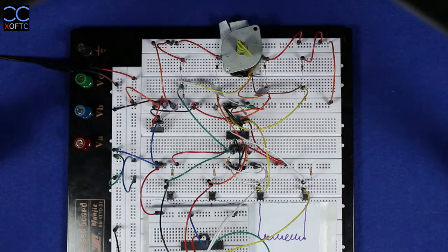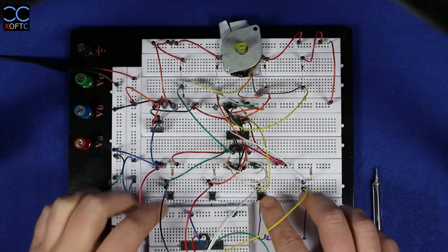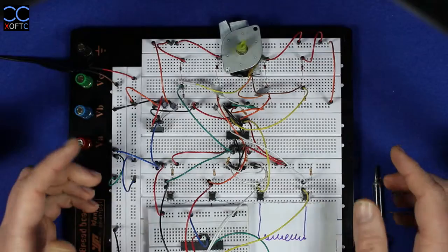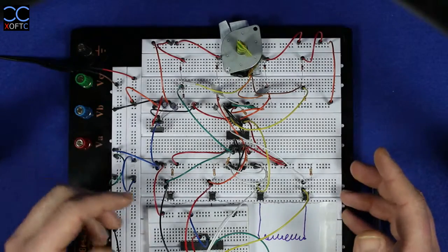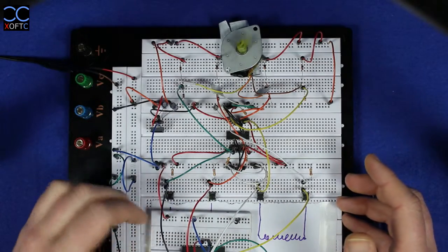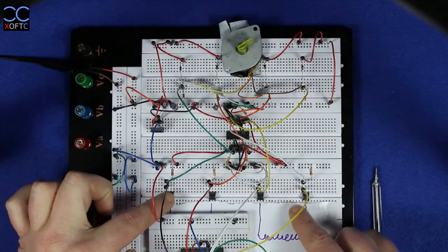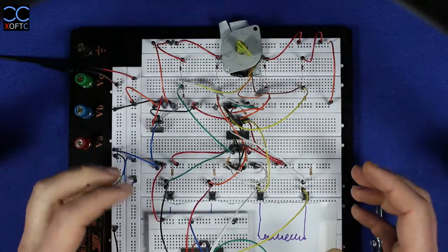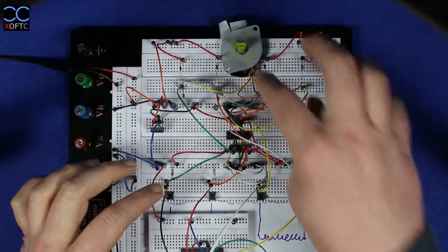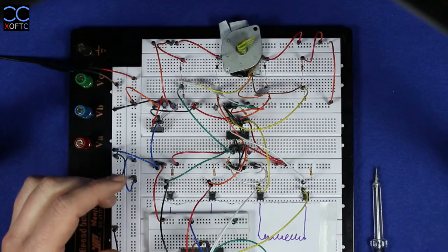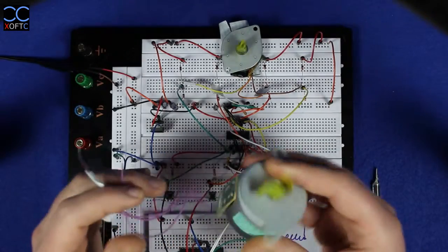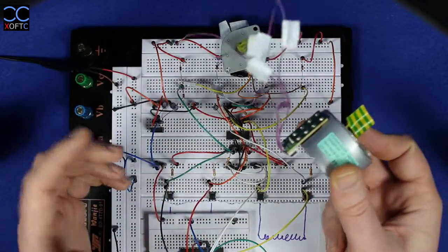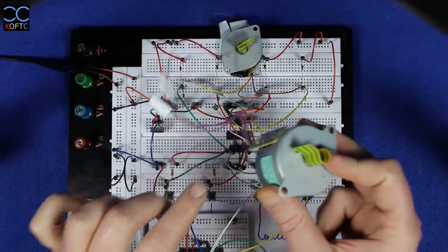But we also have two-two phase excitation method, and that means we're going to excite the two coils at the same time. That gives us more torque in the stepping motor. For that we need a bit stronger stepping motor. That's a 24 volt one, so I'm just going to set it up here and then you can see how two-phase excitation works.